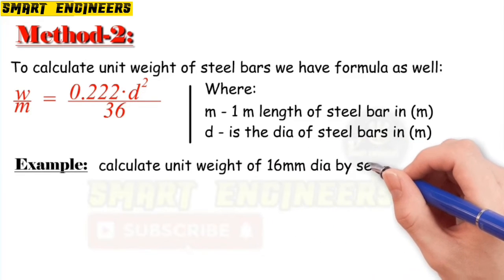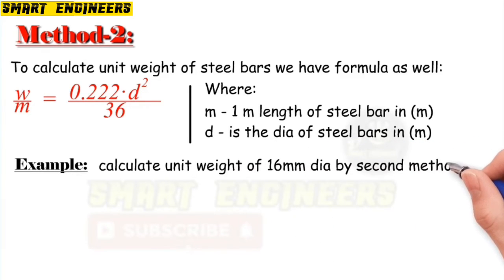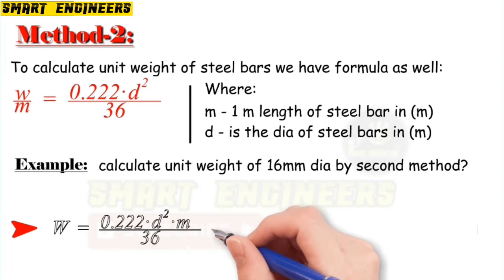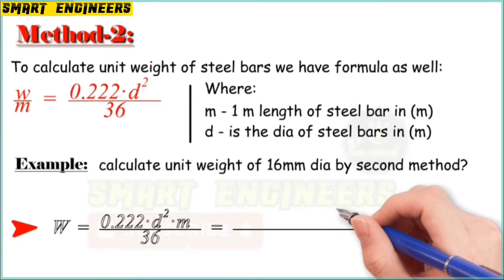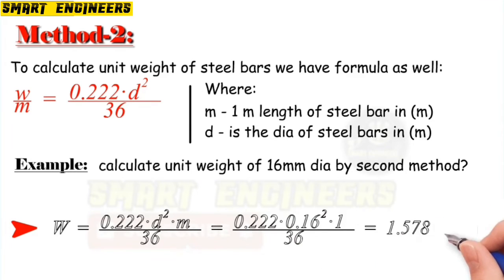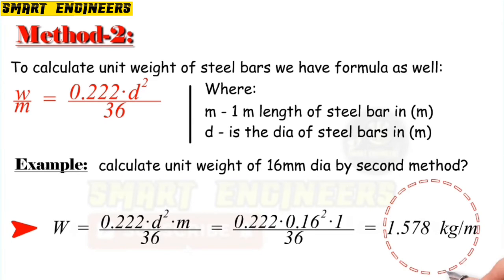Calculate the unit weight per 16 millimeter bar steel by the second method. We will put all these values in the formula and get: W = 0.222 × D² × m / 36. After the necessary calculation, we get the unit weight of steel bar which equals to 1.578 kilogram per meter length.